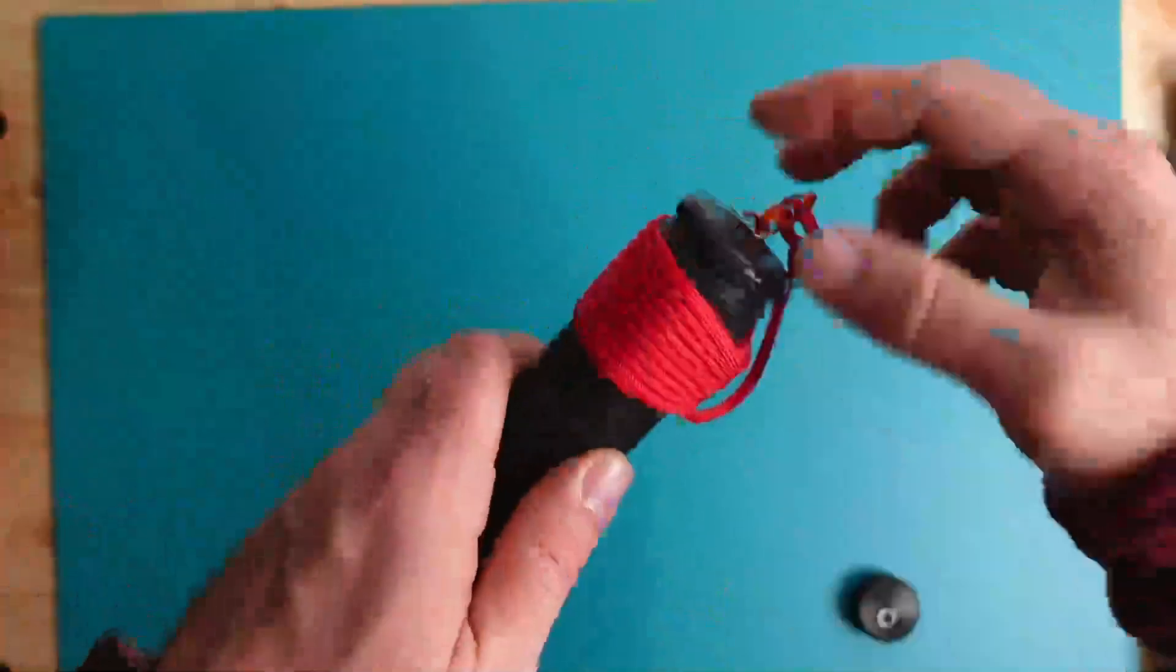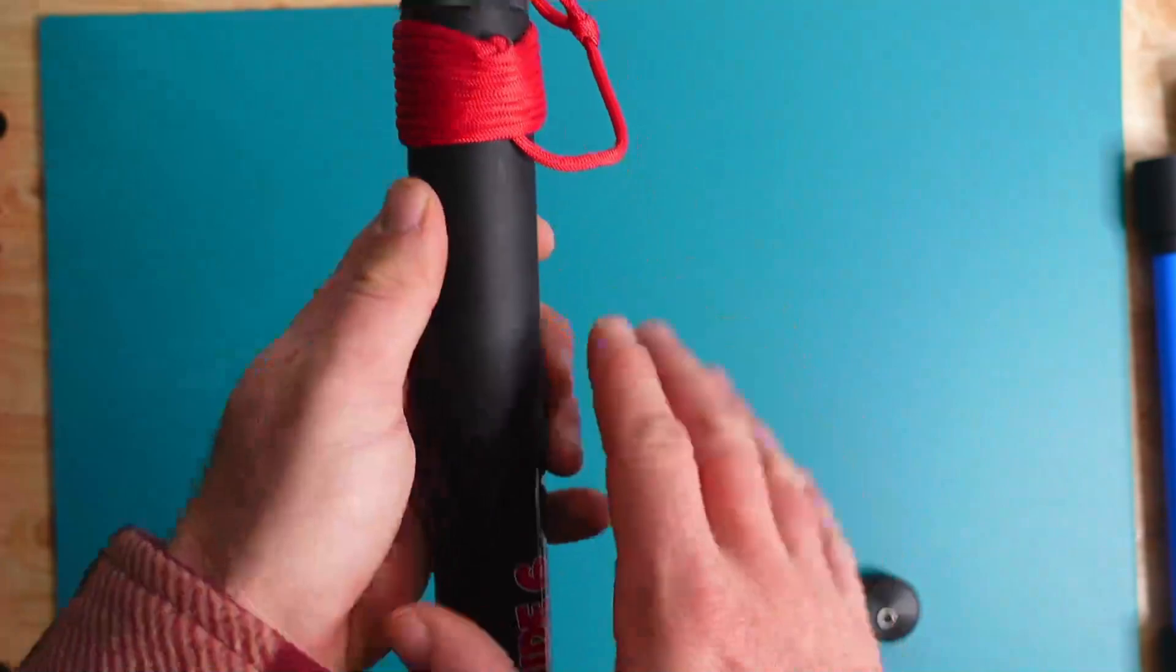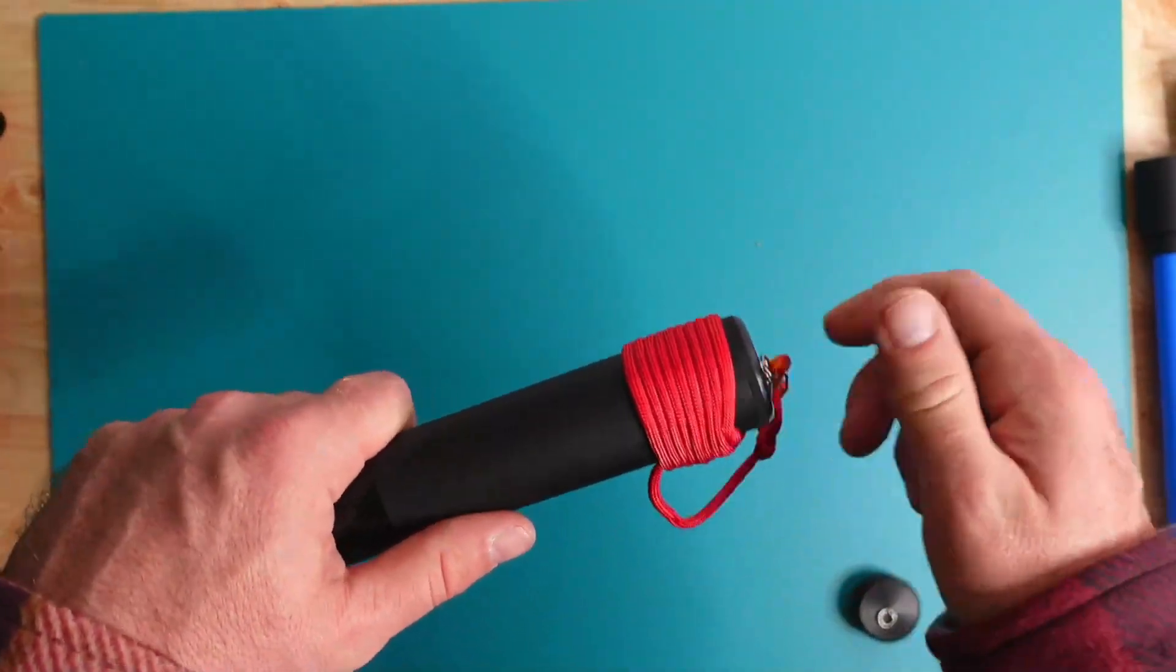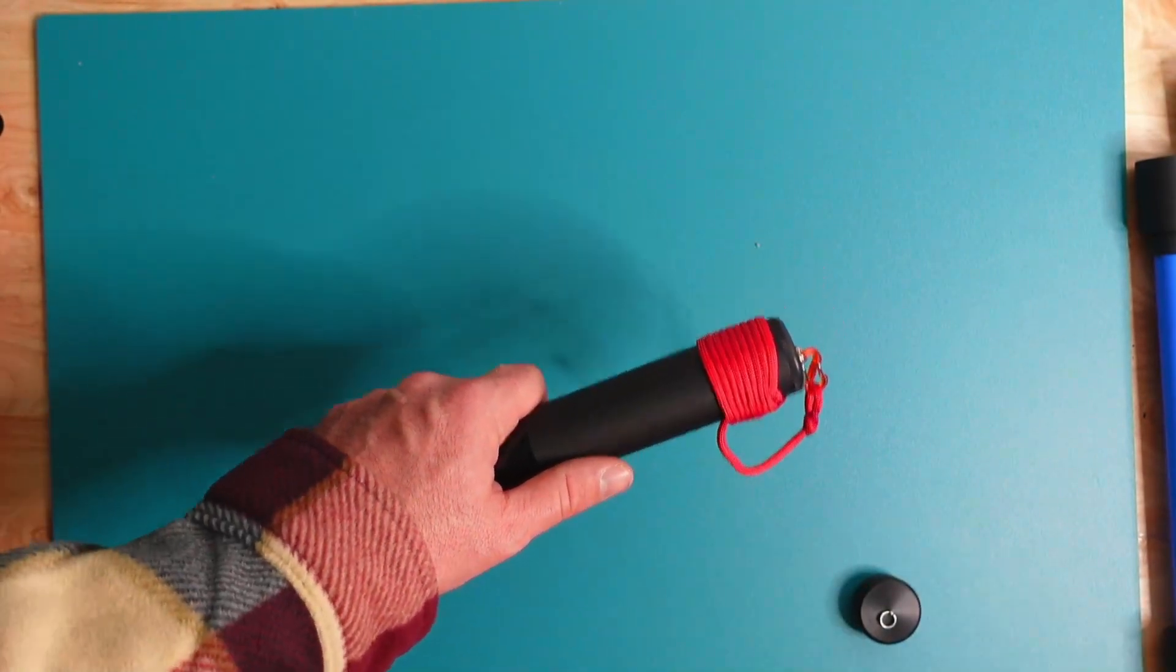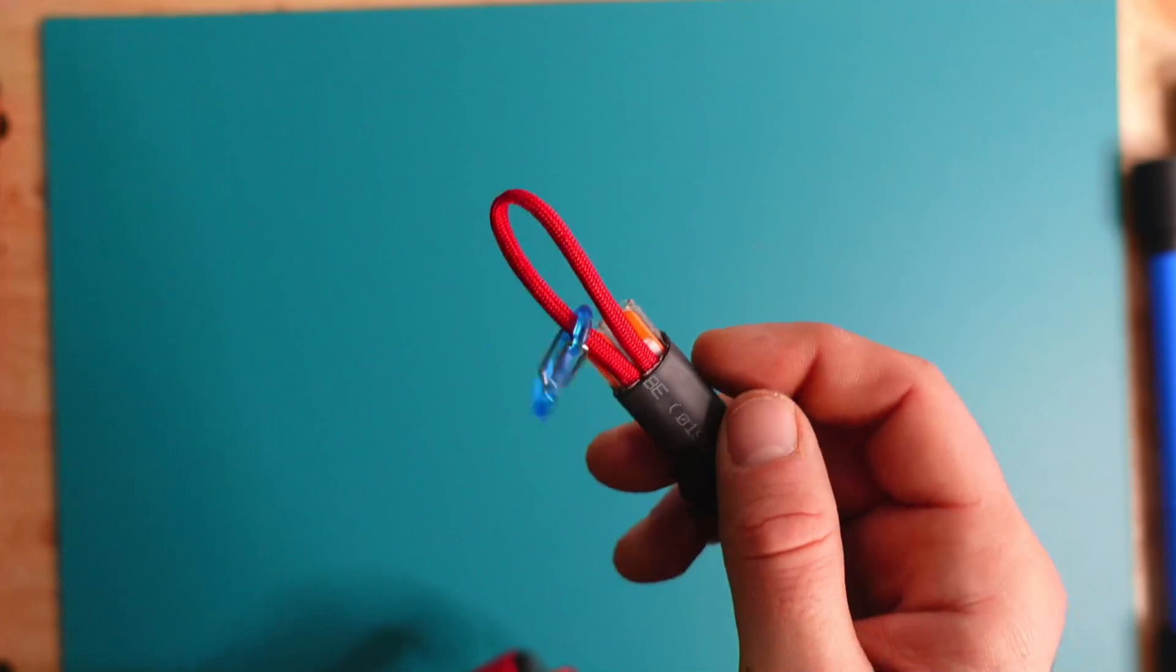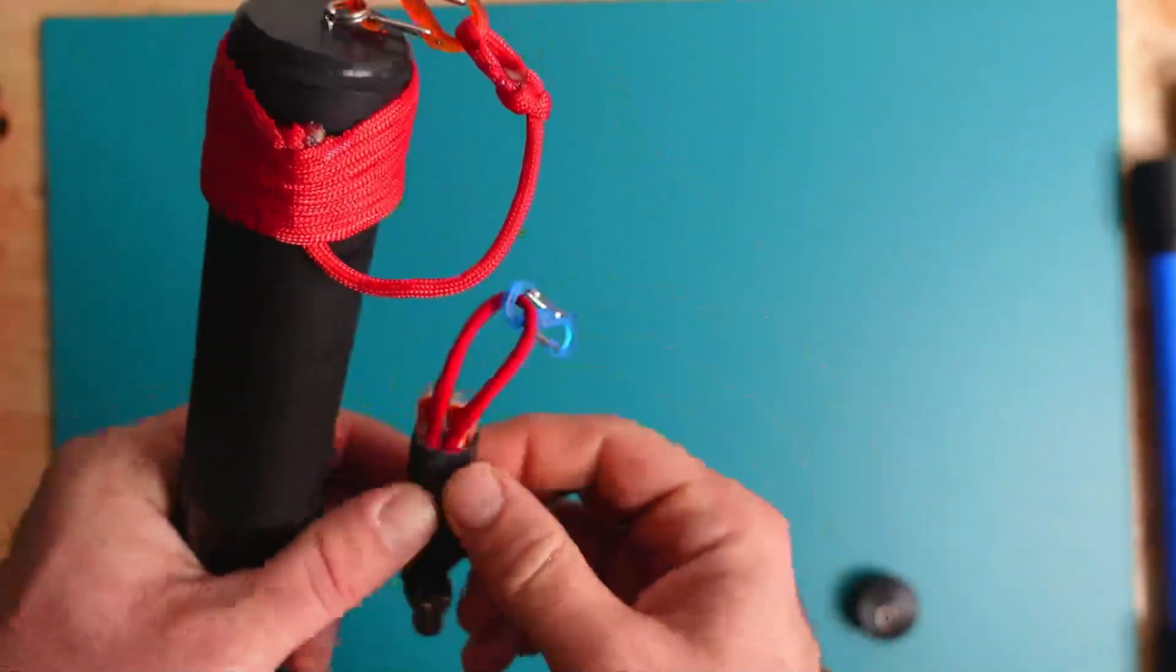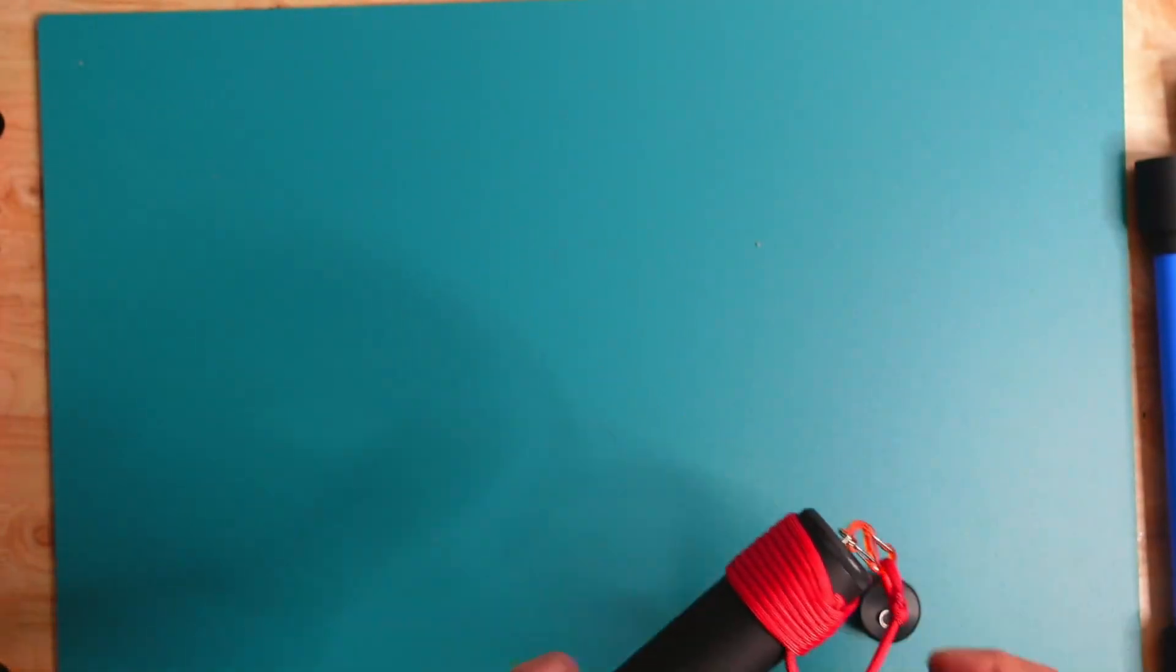And maybe you just don't want to do this wrap configuration. You could probably find some heat shrink. I would caution you to be very careful on your mast using a heat gun for heat shrink and just a little loop of 550 cord.